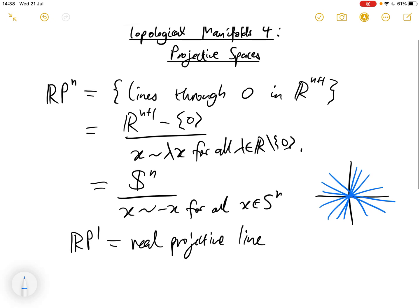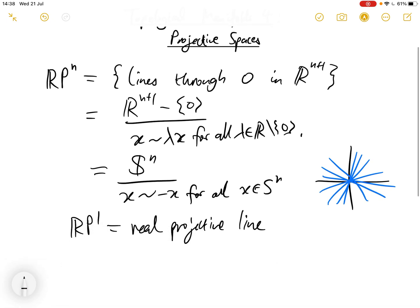And then RP2 is sometimes called the real projective plane. And this is the set of all lines through the origin in R3, and so on.